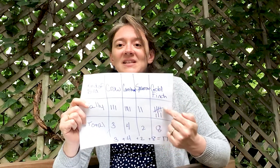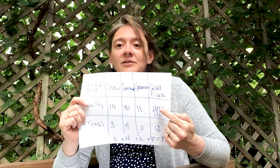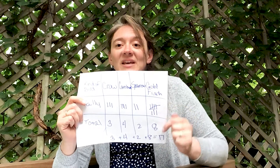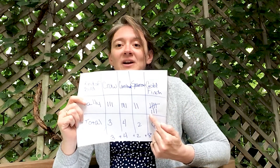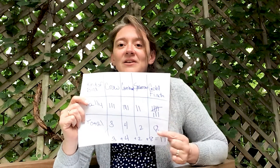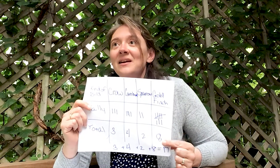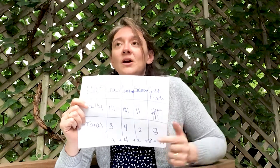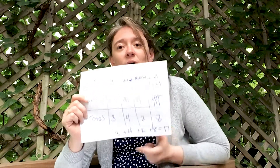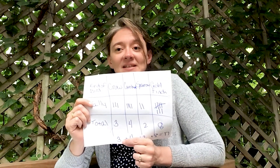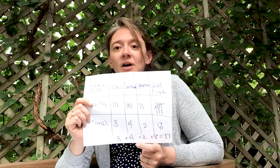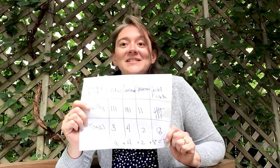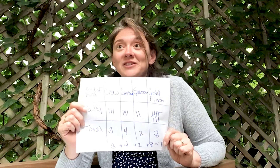When you get to five tally marks, you make the diagonal line. So I have one, two, three, four straight lines, and then the diagonal making five, and then three more — six, seven, eight — so my total is eight. Now add up all these numbers, or write an equation if you need to. For instance, three plus four plus two plus eight is 17. I saw 17 birds while making this chart.